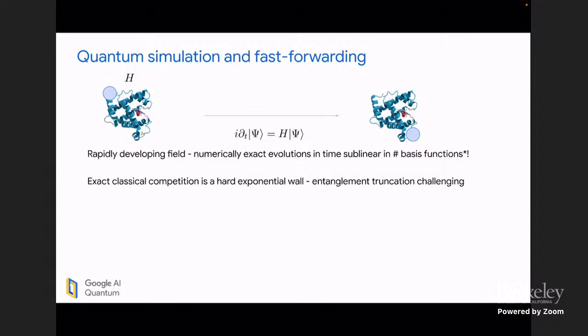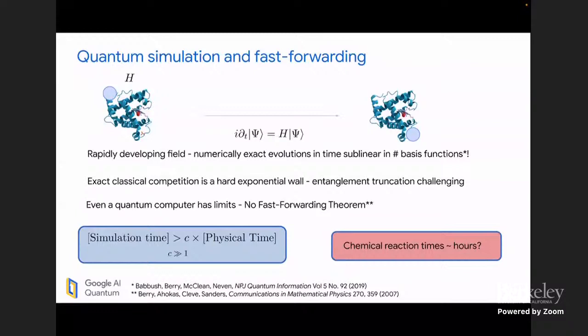And sort of what basically intuition tells us is that even a quantum computer has limits. Basically, we expect the simulation time of a physical system to be at least some multiple greater than the physical time. The intuitive reason without any theorems is just to say that if a system could simulate itself faster than it ran, then it could sort of recursively do that and do any computation instantly. And I'm leaning a little bit on the no fast forwarding theorem here, which, of course, is a query complexity result, so it's not directly applicable. You have to add a bunch of caveats to this, to what you want to say.